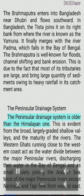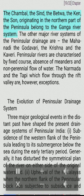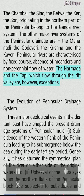The peninsular drainage system is older than the Himalayan one. This is evident from the broad, largely graded, shallow valleys and the maturity of the rivers. The Western Ghats, running close to the western coast, act as the water divide between the major peninsular rivers discharging into the Bay of Bengal and the small rivulets joining the Arabian Sea. Most major peninsular rivers except the Narmada and Tapi flow from west to east. Peninsular rivers are characterized by a fixed course, absence of meanders, and non-perennial flow of water. The Narmada and Tapi, which flow through rift valleys, are exceptions.